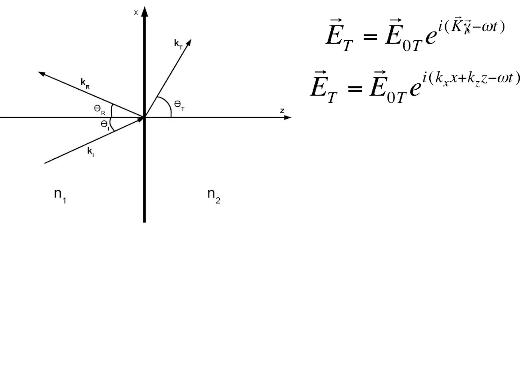Now, on splitting this k into two of its components, which is kx and kz, we get this expression. We are ignoring the ky term because ky is coming out of this plane and this does not affect anything that is happening on this plane. So, we ignore it.